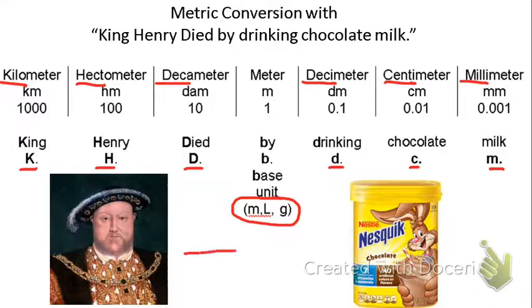Everything on King Henry's side is shown as capital letters because all of the prefixes are greater than the base unit. All of the letters shown on the Nesquik side are little letters because the prefixes are smaller than the base units.